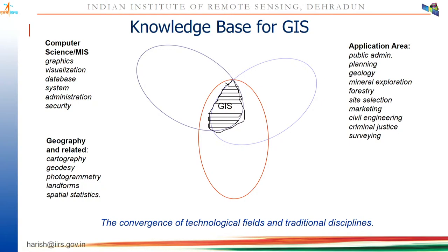In general, geospatial technology integrates computer science, management information systems, geography/cartography, and various application areas. On the application side, you can see public administration, planning, geological applications, mineral exploration, forestry, site selection, marketing, civil engineering, criminal justice, and surveying. Crime GIS is another area becoming very popular — many police departments use it to analyze crime conditions in their areas, identify crime pockets geographically, and even model future crime locations using historical and socioeconomic data.